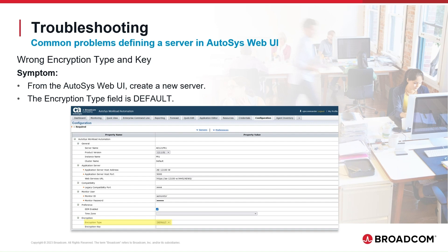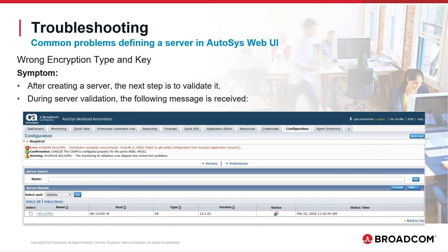Let's start troubleshooting some common errors encountered during the Autosys Workload Automation server definition in the Autosys Web UI. We will start with a problem due to using the wrong encryption type and key. We created a server in the Autosys Web UI with the Encryption Type value set to default. When we validate the server, we receive the following message.